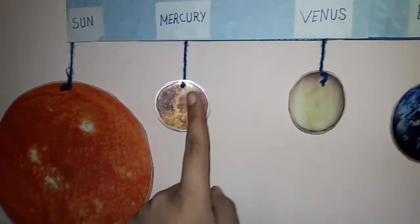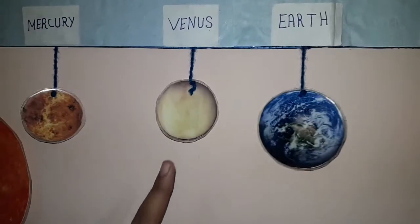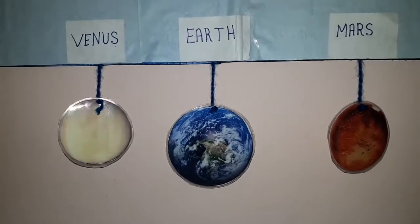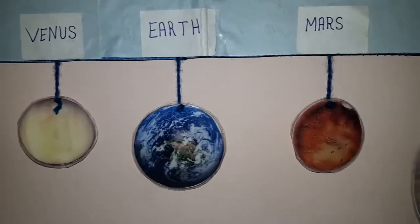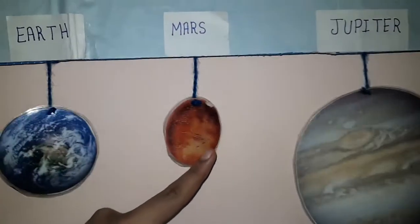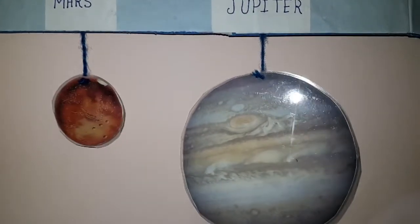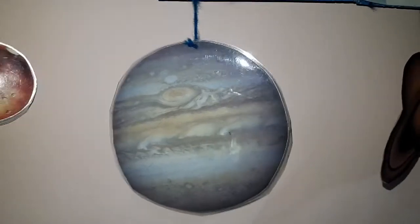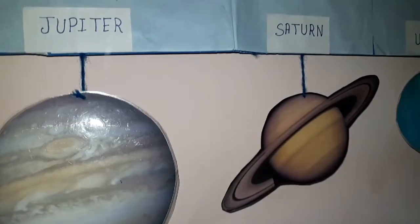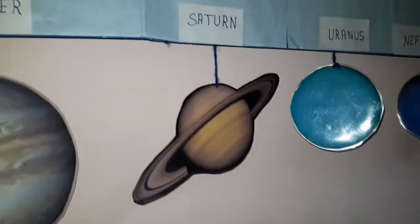This is the Sun, which is also a star and is at the center of the solar system. This is Mercury, the smallest planet. This is Venus, also called the morning star and evening star. This is Earth, on which we live, and is the only planet on which life exists. This is Mars, also called the red planet, because its surface is red.